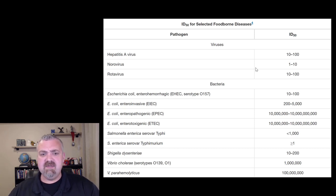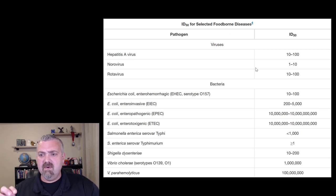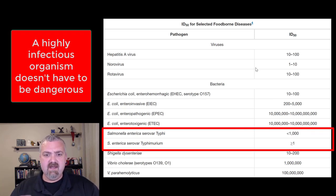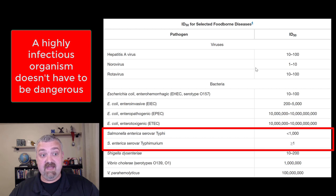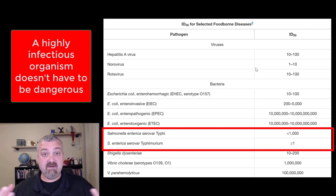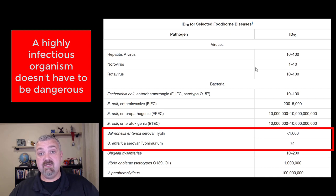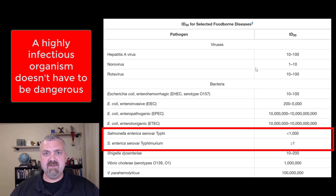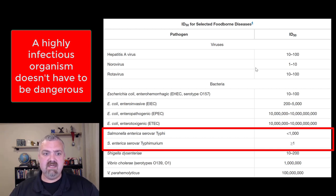Let me show you an example. You have Salmonella enterica serovar Typhi — it takes about a thousand organisms to cause an infection, but the mortality rate of this typhoid fever is about 10%. Whereas right below it, Salmonella enterica serovar Typhimurium is going to lead to just your more basic salmonellosis, which has a mortality rate of around 1%, especially in people that are getting treatment. So you notice that the infectious dose really has nothing to do with how dangerous an organism would be.